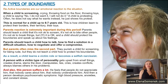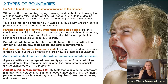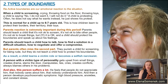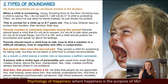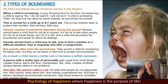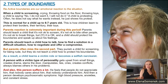I would like to talk to you about two types of boundaries: reactive boundaries and proactive boundaries. Reactive boundaries are our emotional reaction to the situation — when a child is screaming, crying, throwing food on the floor, throwing toys, saying no, I don't want it, I will not do it, a child is protesting. And often a child does not tell us what he wants; he just says no, and this is normal.